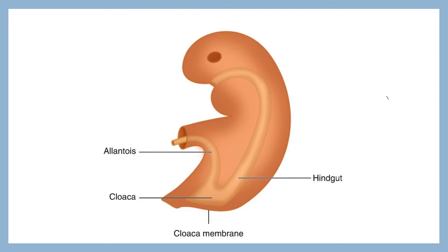The allantois is the one which divides the endodermal cloaca. This divides the endodermal cloaca into pre-allantoic and post-allantoic. Above the allantois it is considered as pre-allantoic, and below the allantois it is a dilated part which is called the post-allantoic part.